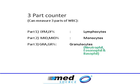Cell counters are typically of two types when we talk about automated hematology analyzers: three-part hematology analyzers and five-part hematology analyzers. We call them three-part cell counters because they measure three parts of white blood cells. The first part they measure is lymphocytes, the second is monocytes, and the third is granulocytes — meaning they measure total granulocytes, which includes neutrophils, eosinophils, and basophils.